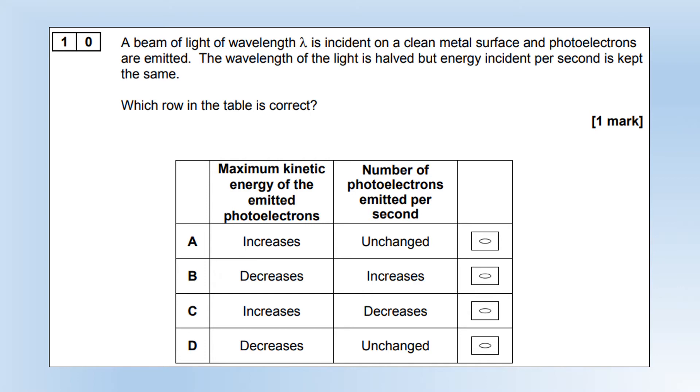A beam of light of wavelength lambda is incident on a clean metal surface and photoelectrons are emitted. The wavelength of light is halved but the energy incident per second is kept the same. If you halve the wavelength, you double the frequency, which means you double the photon energy, which means you're going to increase the maximum kinetic energy. But if the total energy per second is kept the same and each photon has double the energy, that means half the number of photons are arriving, which means the number of photoelectrons emitted is going to decrease.